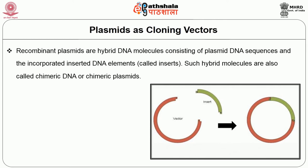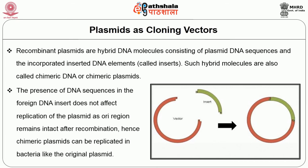Such hybrid molecules are also called chimeric DNA or chimeric plasmids. The presence of foreign DNA insert does not affect replication of the plasmid, as the ORI region remains intact after recombination. Hence, chimeric plasmids can be replicated in bacteria like the original plasmid. Bacterial cells can harbor one or more copies of a particular plasmid depending on the nature of the plasmid replicator.